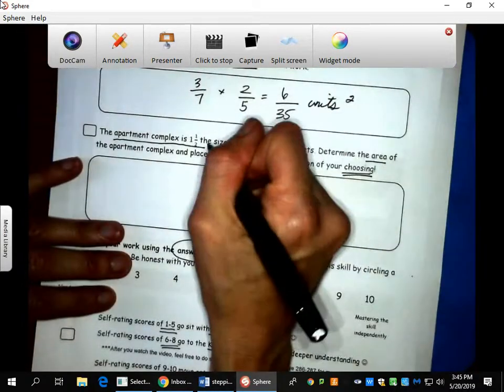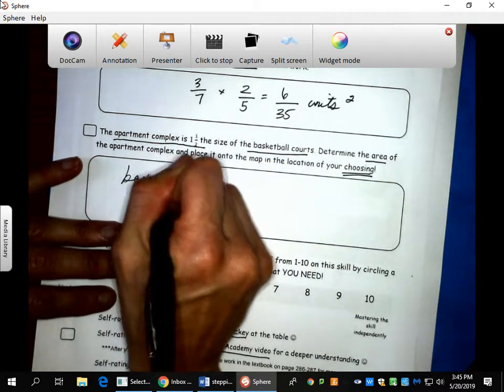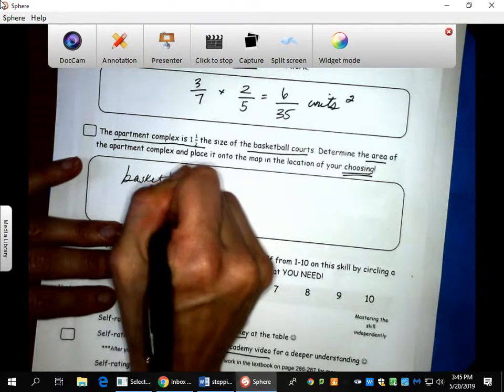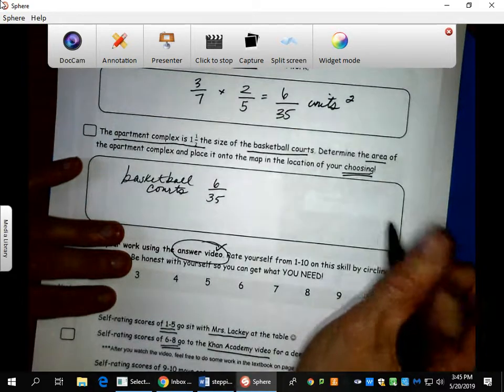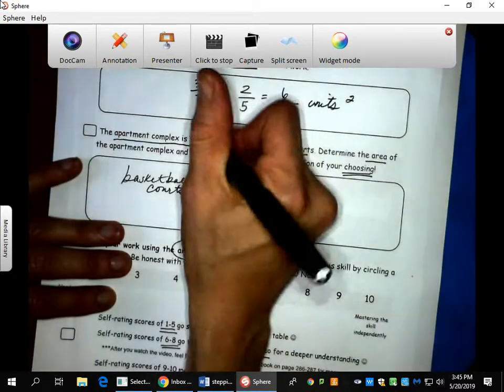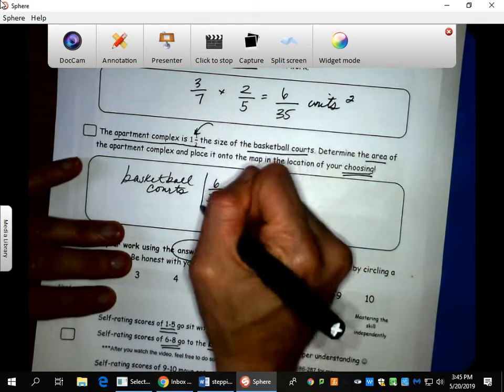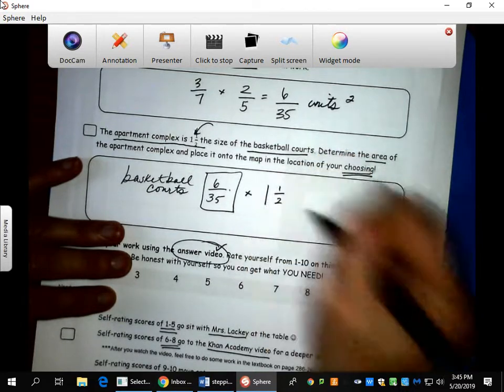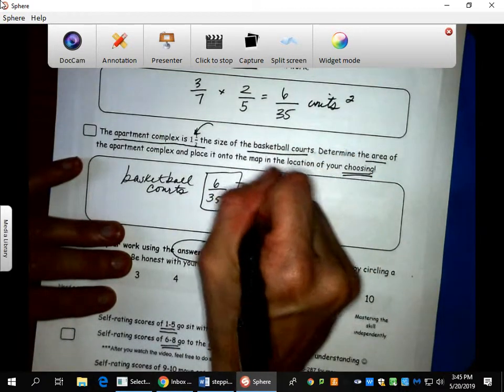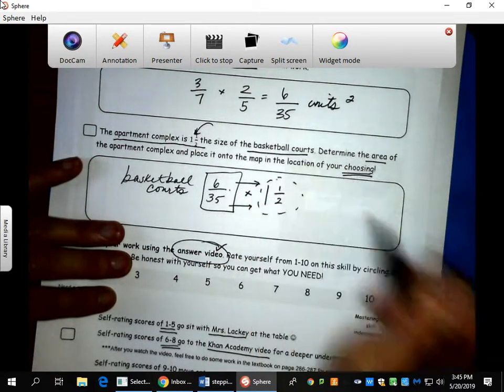Now the last one that you had to do alone is the apartment complex. It's one and a half the size of the basketball court. So wait, I know that the basketball court, we just figured that out, that's six-thirty-fifths. So if this is one and a half, that's bigger. One and a half times this, one and a half of whatever this, that is multiplication. Now the thing is, when you go to multiply like that, you say, wait a minute, I just want a numerator and a denominator. So I have to switch this to be improper.